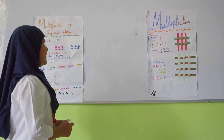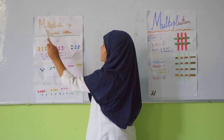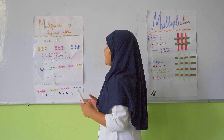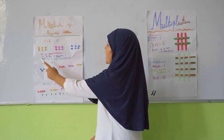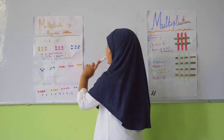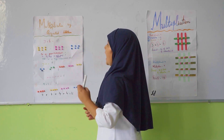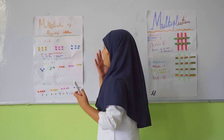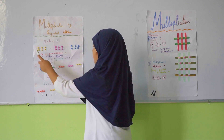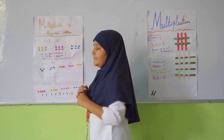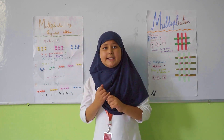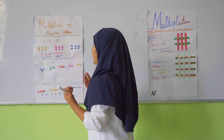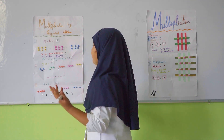Here is a question: 3 multiply by 6. So here are 3 groups. How many things are in each group? There are 6 things in each group.